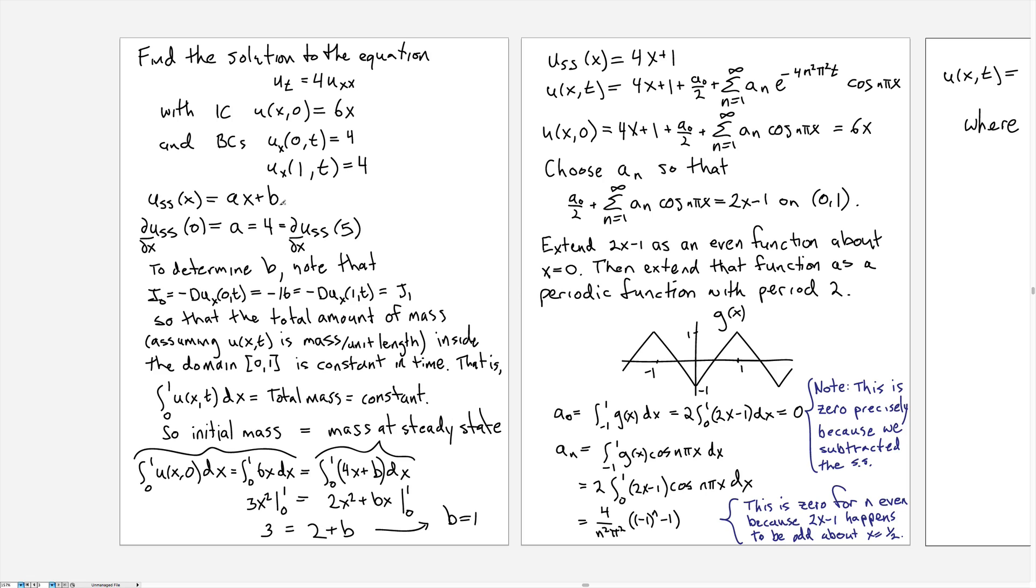So as with the Dirichlet case, the first step is to calculate the steady state. And with Neumann, as I described earlier, this is a little bit more complicated. So if you take a derivative of this expression here, you get just a, the slope, and that has to be equal to 4 as dictated by the boundary conditions.